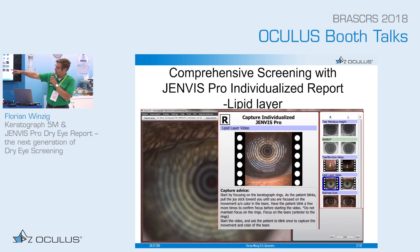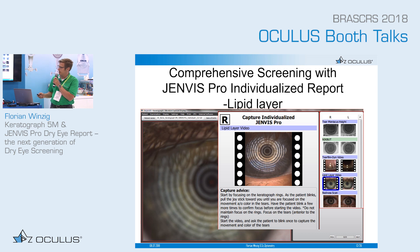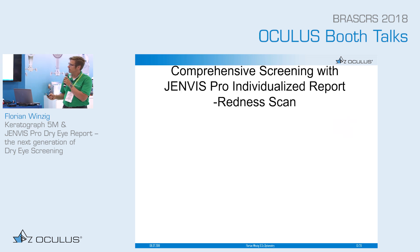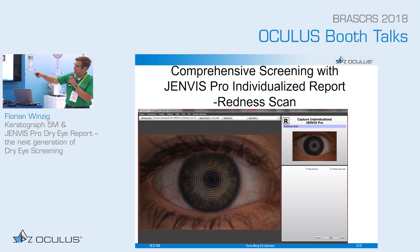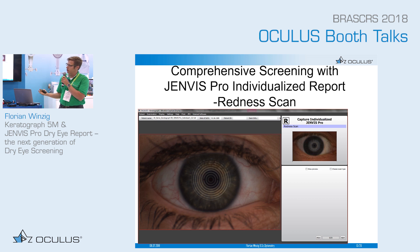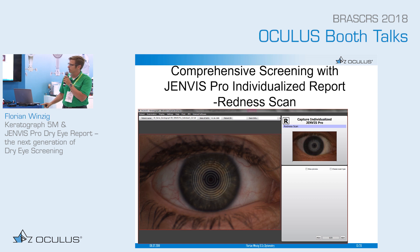Everything described is also written as instructions for the technician performing the examination process. The redness scan is also very easy to perform — you simply capture an image where the thin red vessels of the sclera are sharp, and then the software automatically calculates the ratio between the thin red vessels and the white background of the sclera.